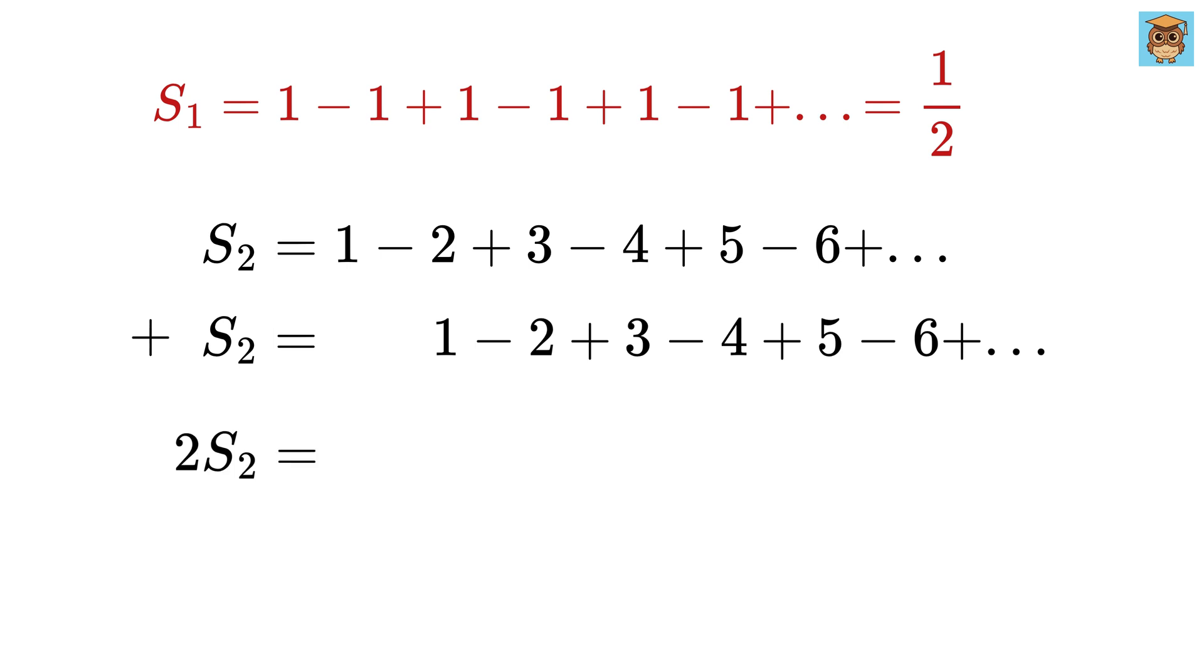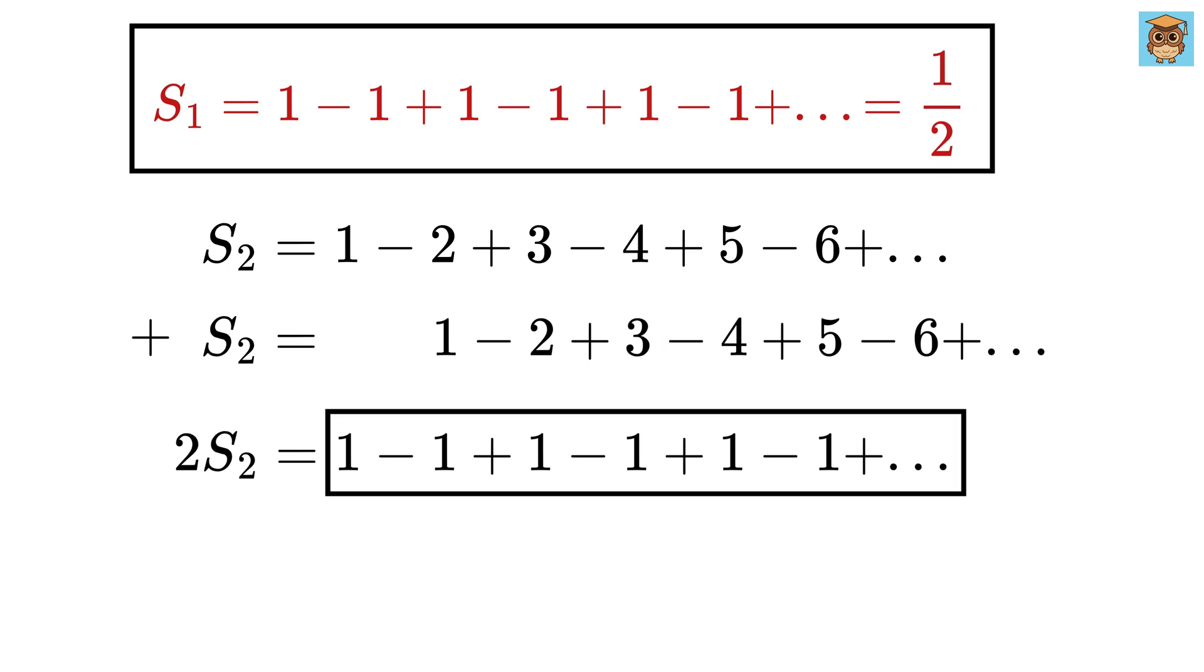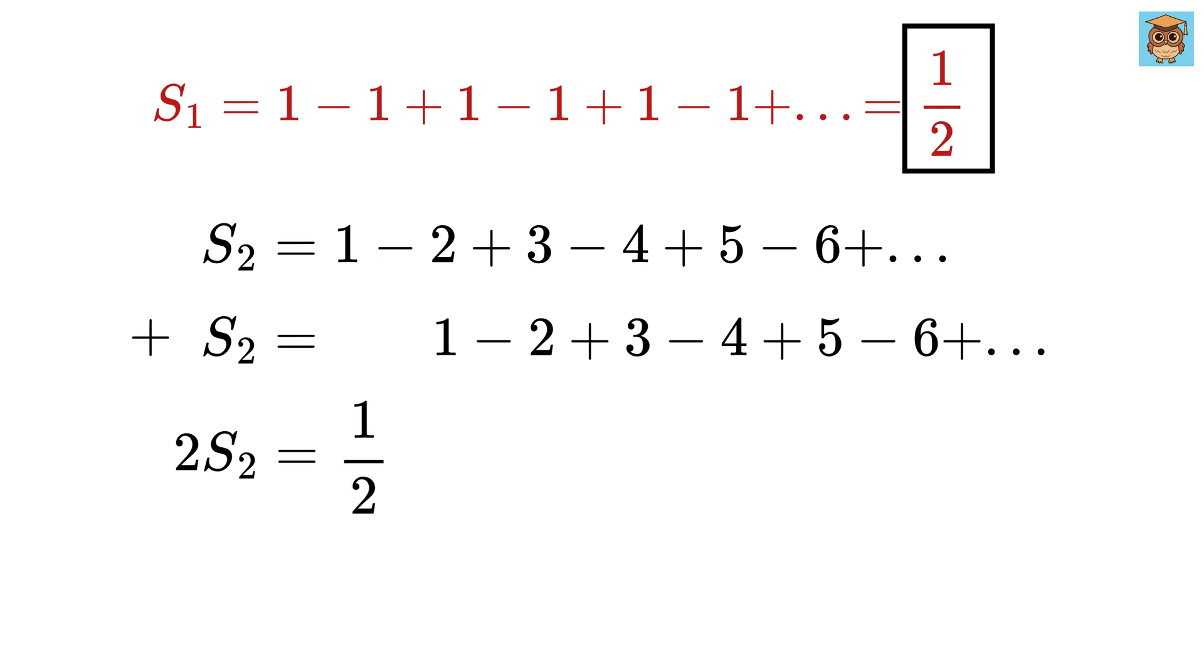And this as, this will be 1, then minus 2 plus 1 will be minus 1, then 3 minus 2 will be 1, then minus 4 plus 3 will be minus 1, and so on. But, hey, we have already calculated the sum of this series, which turned out to be half. So, S2 equals 1 over 4.